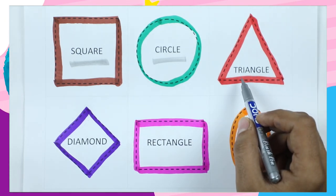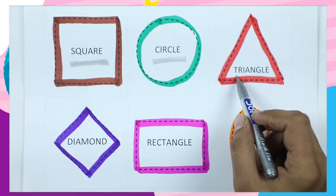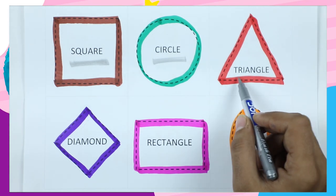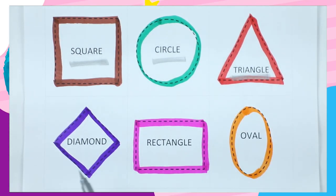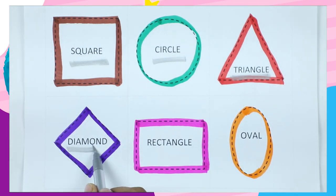Which shape is this? Triangle. T-R-I-A-N-G-L-E. It's a triangle with red color. Which shape is this?